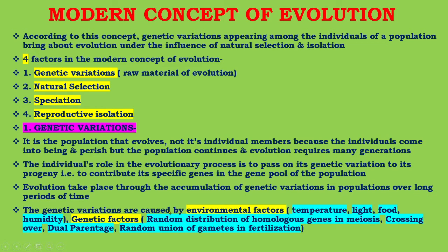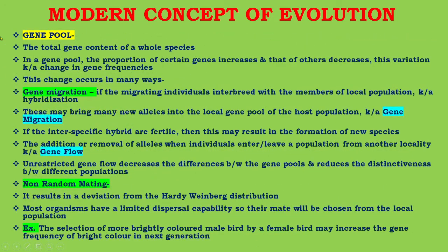Genetic variations are caused by environmental factors such as temperature, light, food, and humidity, and by genetic factors such as random distribution of homologous genes at meiosis, crossing over, dual parentage from both maternal and paternal sides, and random union of gametes in fertilization. It involves the gene pool — the total gene content of a whole species. In a gene pool, the proportion of certain genes increases and that of others decreases; this variation is known as change in gene frequencies.